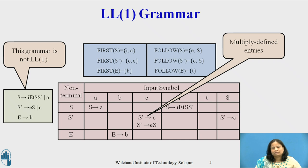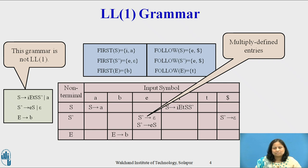We can resolve the ambiguity if we choose the production S-dash derives e S. This choice corresponds to associating else with the closest previous then.